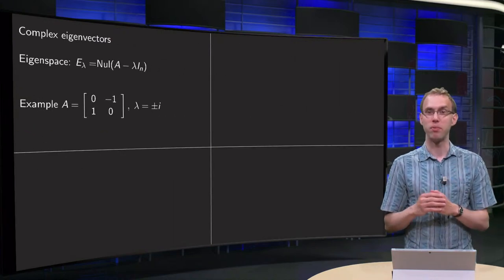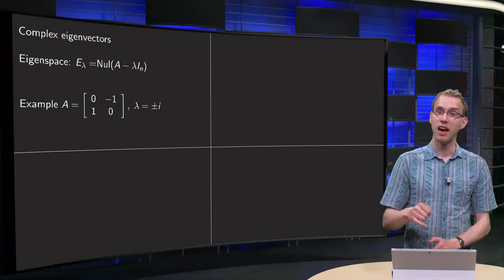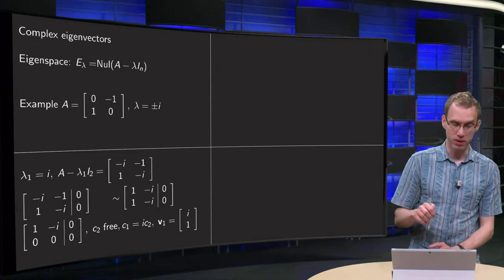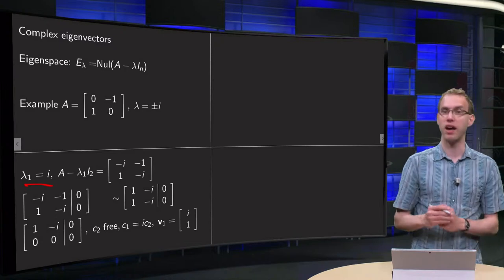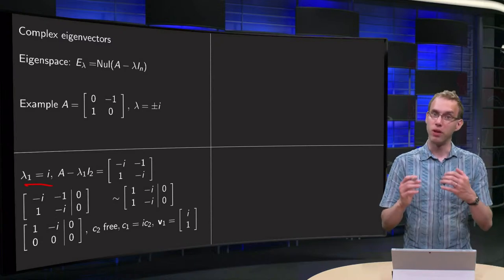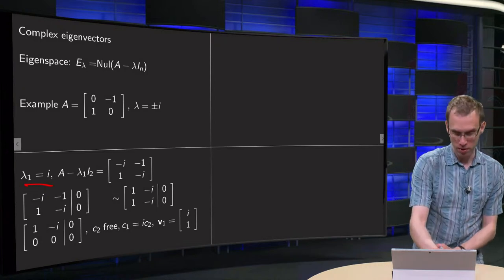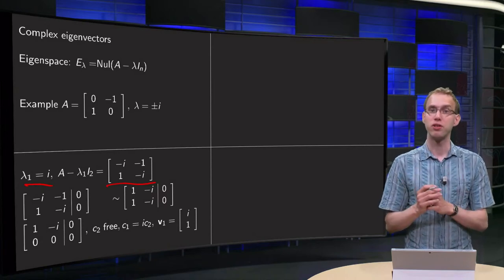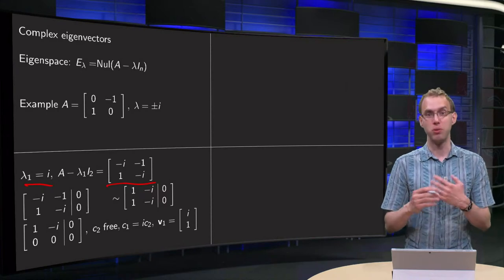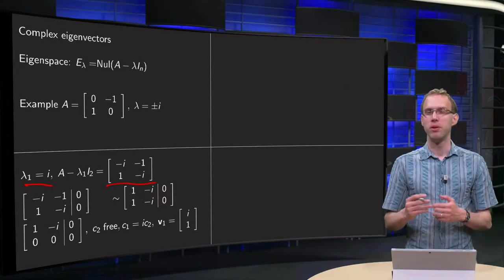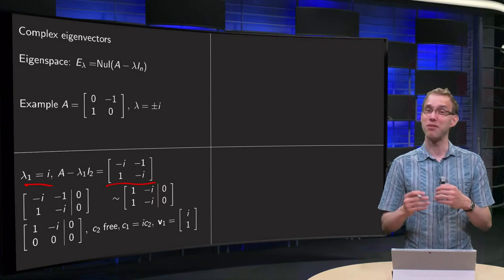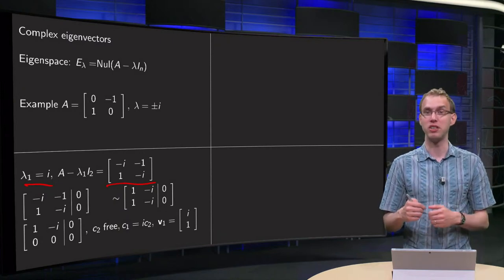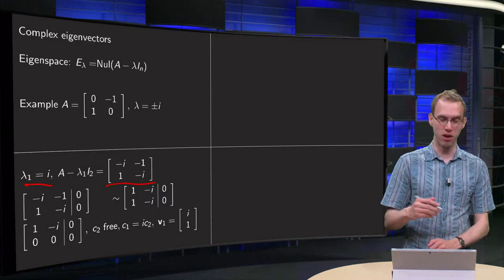We have our matrix [0, 1, -1, 0], our eigenvalue is plus or minus i, and let's try to find the null space of A minus lambda times I, where we take first the eigenvalue lambda equals i. We compute our matrix, and then we have to find the null space of this matrix. We add the zeros, and then we have to do row reduction. That's the nasty part, because now we have complex numbers in our matrix — we can do the same row reduction steps, but we have to do computations with complex numbers now, and that makes it technically a bit harder.